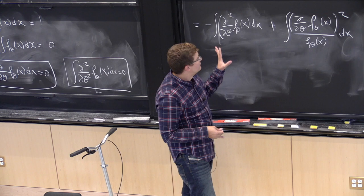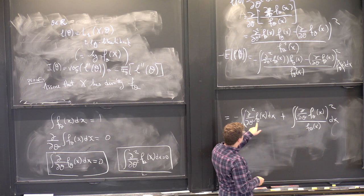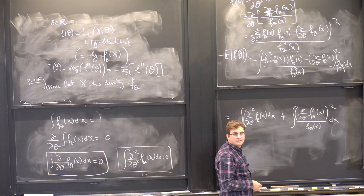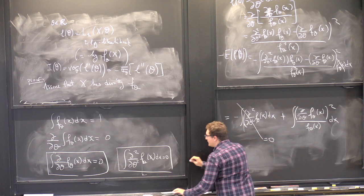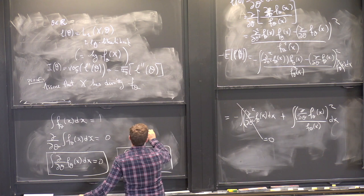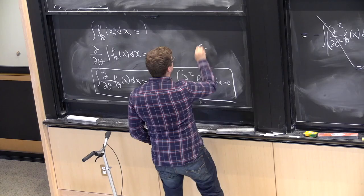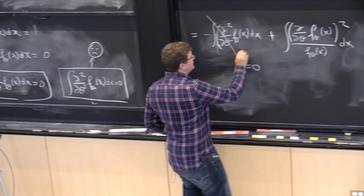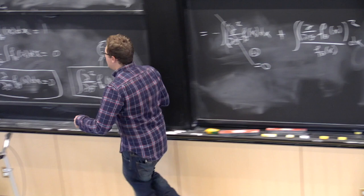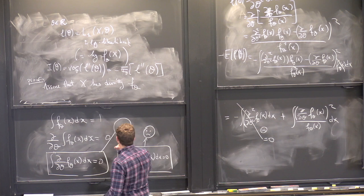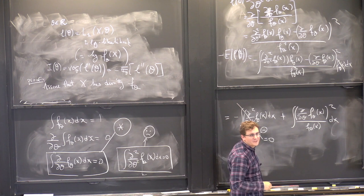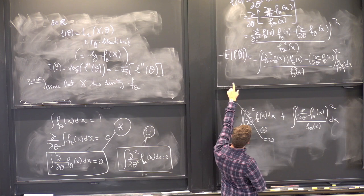So the first term here is the integral of d squared over d theta squared of f theta dx. What is this? It's 0 — and that's because the integral of the second derivative of f is zero. I'll call this equation 'star' and use it later.